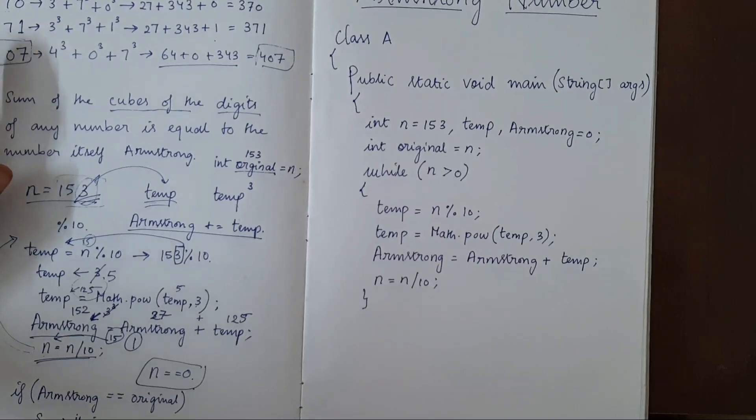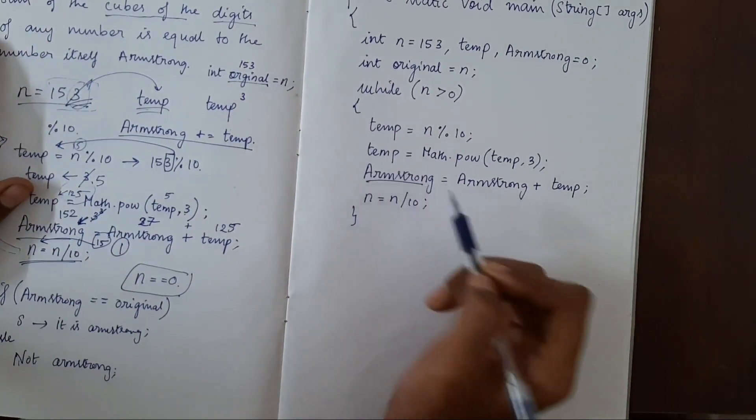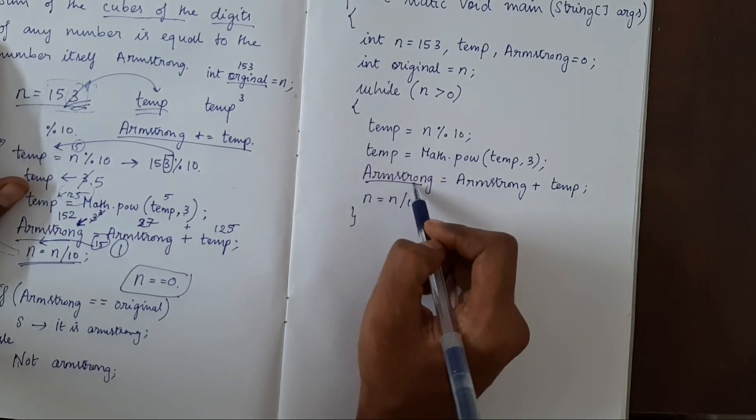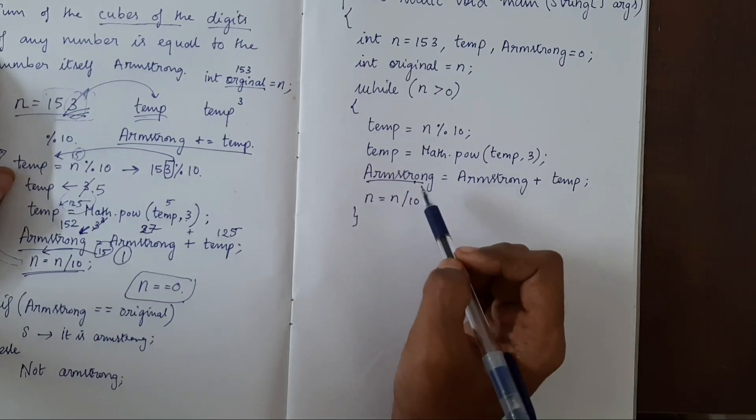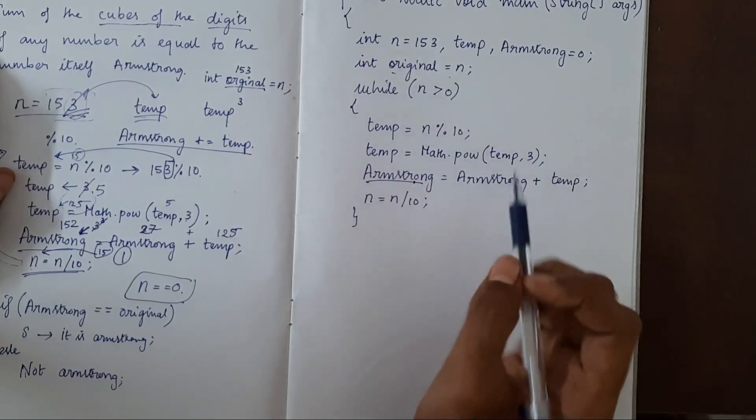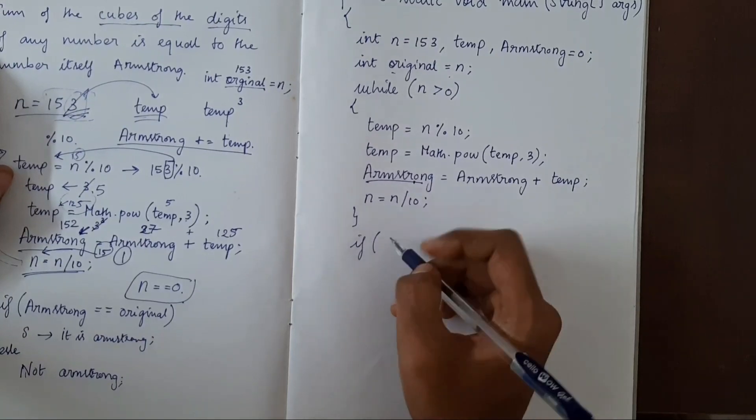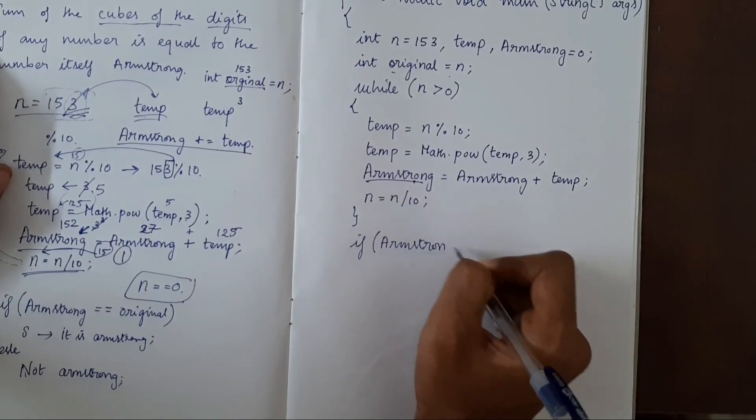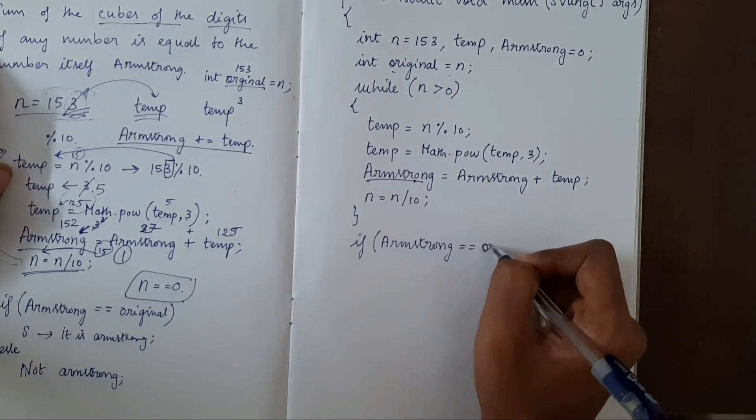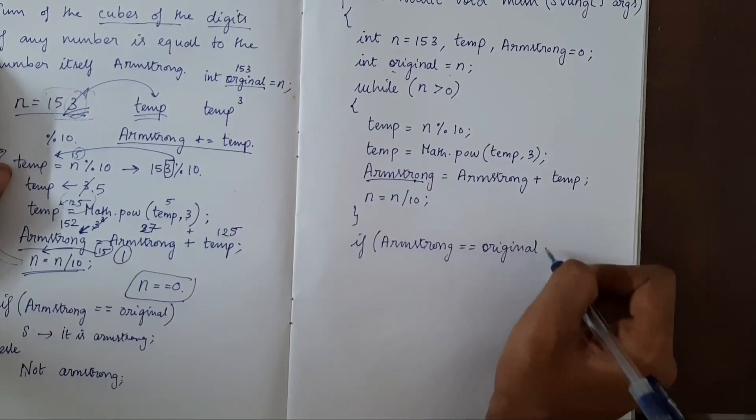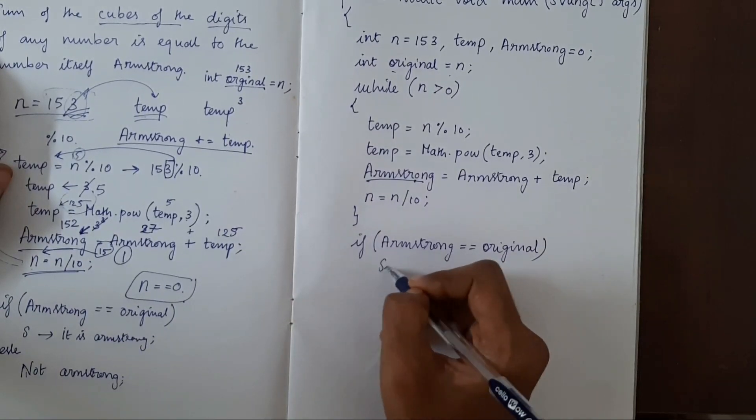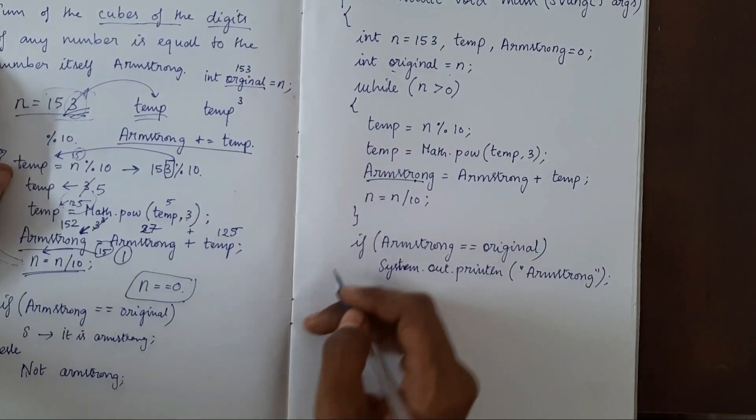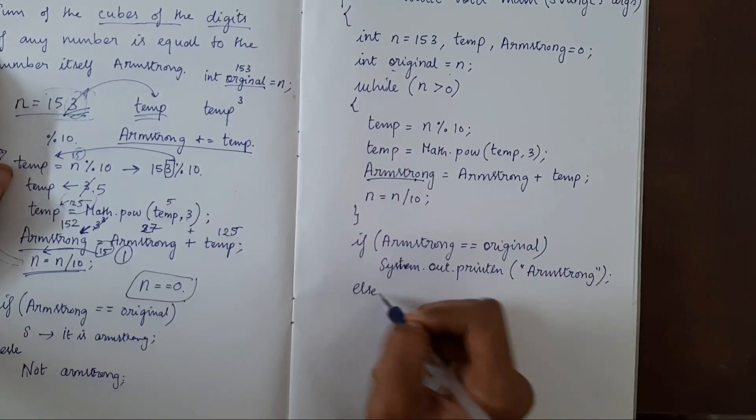Now we have to eliminate the last digit in n. After this while loop is completed, we'll have Armstrong with some value. We have to check if this value, which we have produced after adding the cubes of the digits of the number, is equal to the original number. If Armstrong equals original, then we print Armstrong, else not Armstrong.